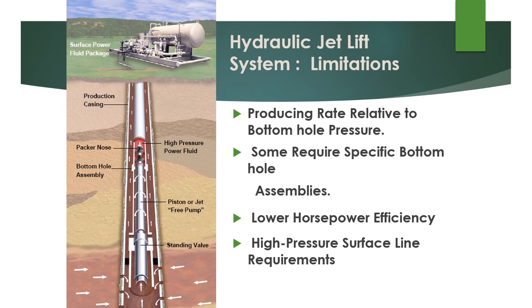Limitations of the hydraulic lift jet system: First, production reliability - because the jet lift is not a positive displacement pump, your flow rate is directly related to your bottomhole pressure. Second, almost all jet pump assemblies require a specific assembly design, so you have to plan from the beginning if you are going to install a hydraulic system in the future. Third, low power efficiency. Fourth, high pressure surface lines are required - rear injection pressure is almost more than 40 to 50 kg per square centimeter - so high pressure injection lines are required. These are the limitations of the hydraulic jet system.